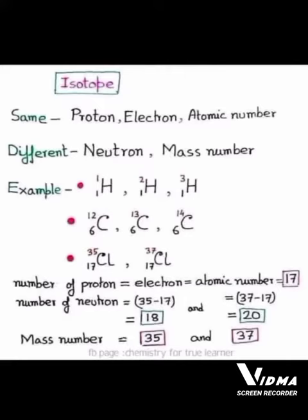For example, hydrogen has three isotopes: protium, deuterium, and tritium. All of them have the same atomic number but different numbers of neutrons. Due to different numbers of neutrons, they have different mass numbers.